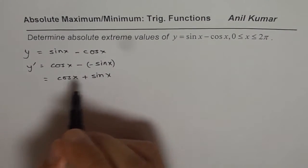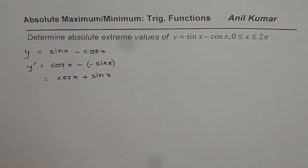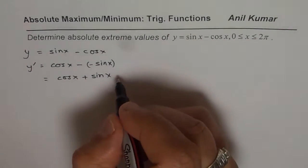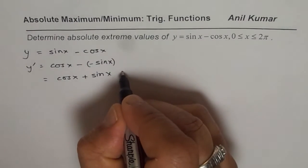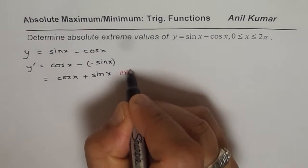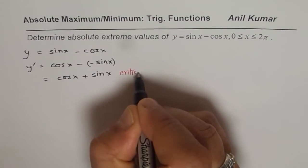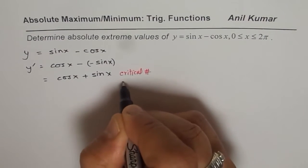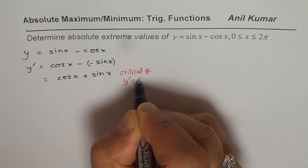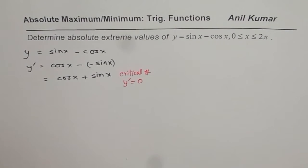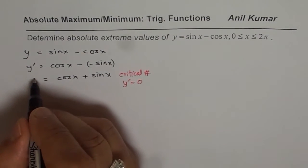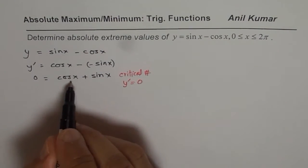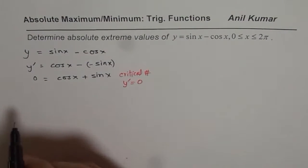Now for the critical number, this derivative should be 0. So we are trying to find the critical number. For the critical number, the derivative should be 0, so we will equate this to 0 and solve for x.